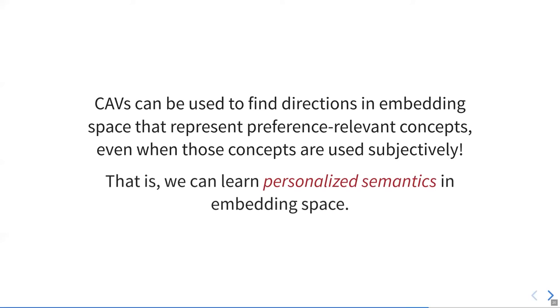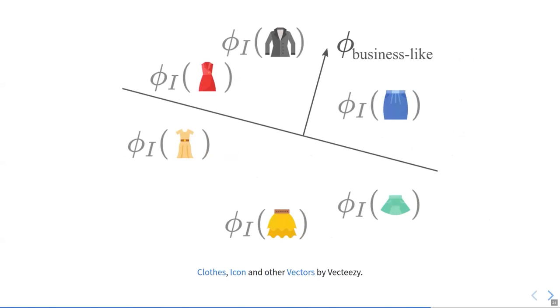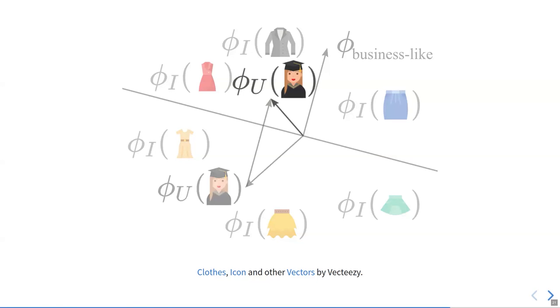Now we might say, okay, interesting, but the original motivation for this was conversational recommenders. So when are we going to hear about how to use this for conversational recommenders? We explore one possible application of CAVs in our paper. Assuming we have these item embeddings, we've learned a concept activation vector for business-like. Now we also have the user embedding, which so far we haven't used at all. Let's say this user says they need something business-like or more business-like. Then we can adapt our user embedding in CAV direction to get a user embedding that's more similar to business-like items than non-business-like items.